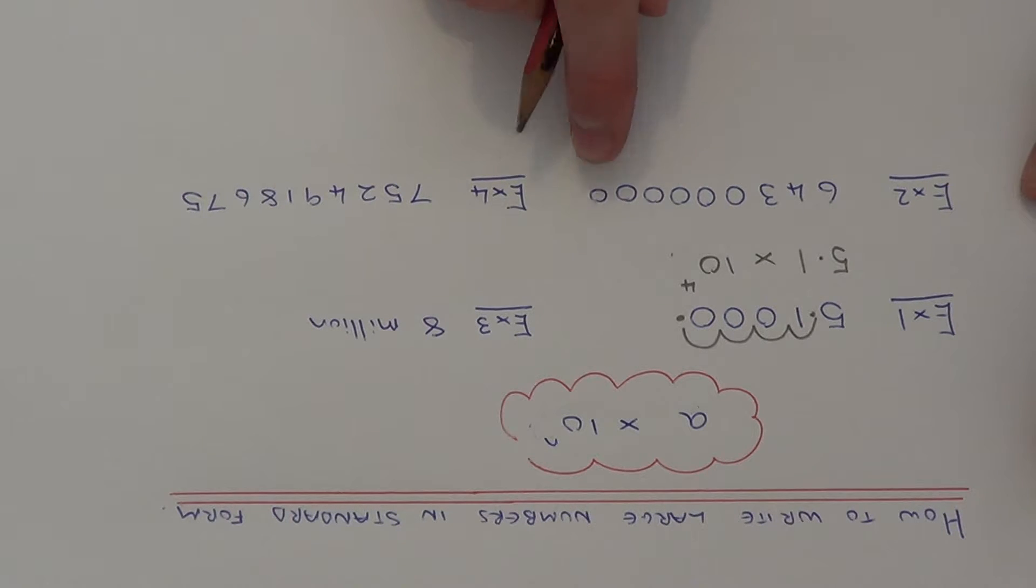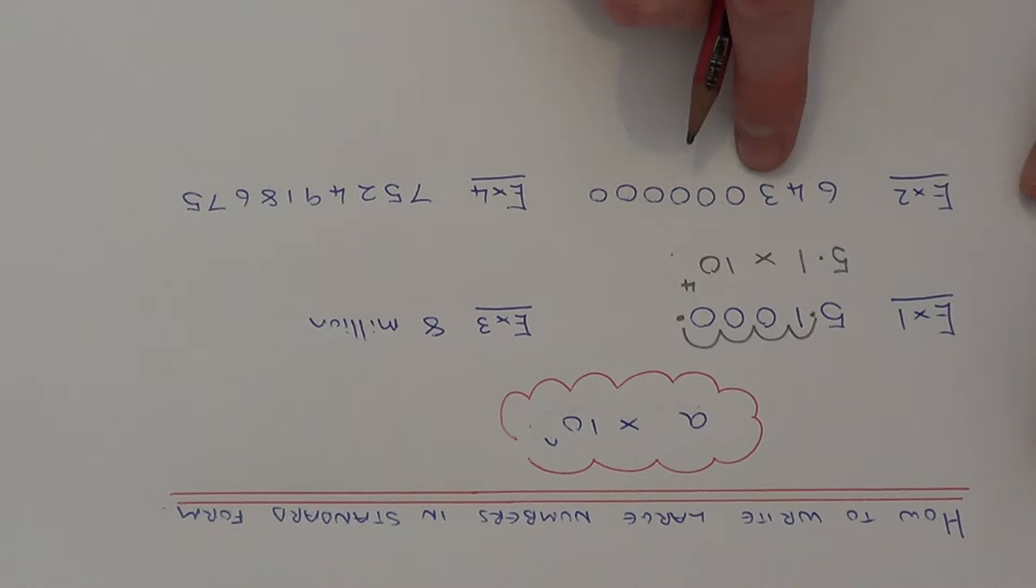So let's have a look at our next number. So this time we've got 643,000,000. Again, we need to make our first digit between 1 and 10. So let's go with 6.43.